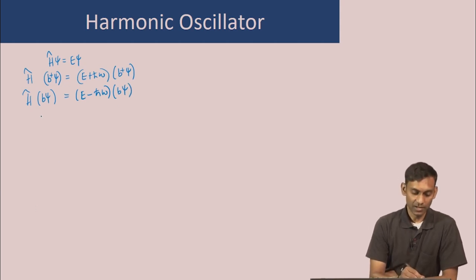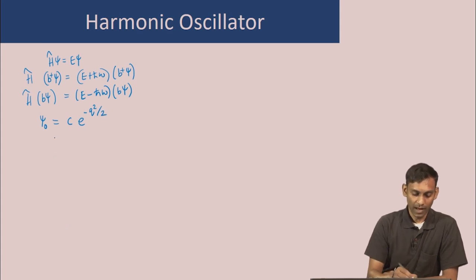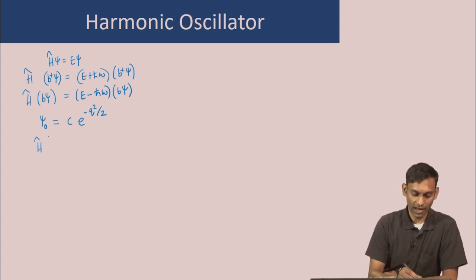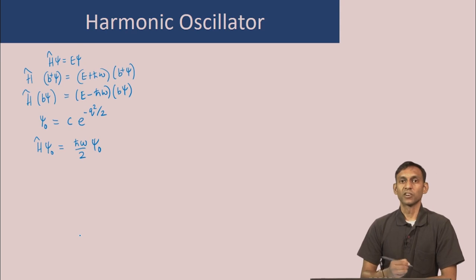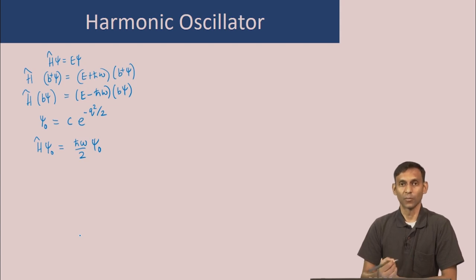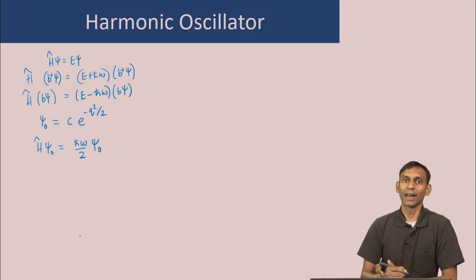Moreover, we have seen that the lowest eigenfunction has the functional form C·e^(−q²/2) with eigenvalue ℏω/2. The other eigenfunctions can be obtained by operating with the ladder-up operator b† on the lowest eigenfunction. So let us now do that.